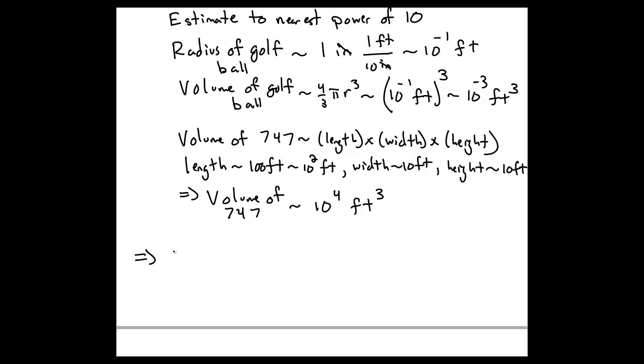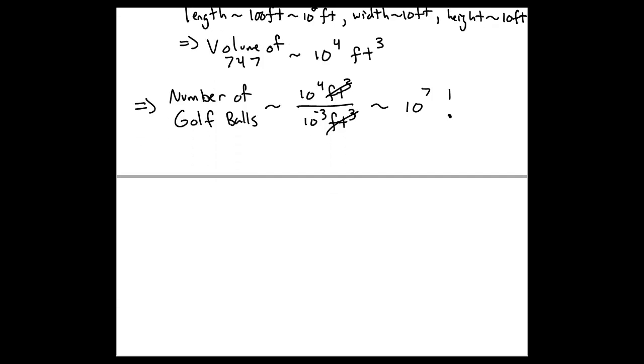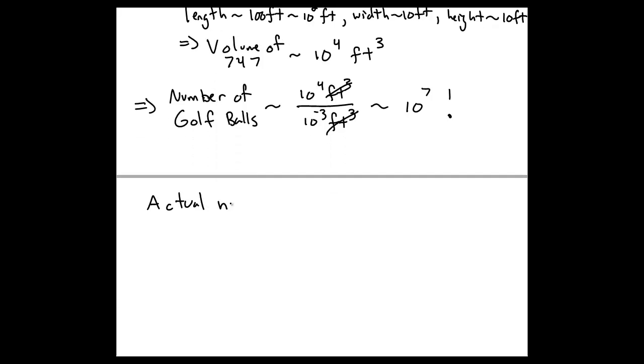Again, we're just estimating to the nearest power of 10. So I can use these estimates in my dimensional analysis above, and so if I want to estimate now the number of golf balls, it's 10 to the 4 feet cubed over 10 to the minus 3 feet cubed, which gives me a factor of 10 to the 7 golf balls in a 747.